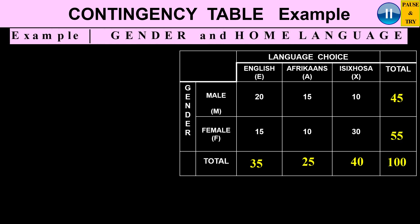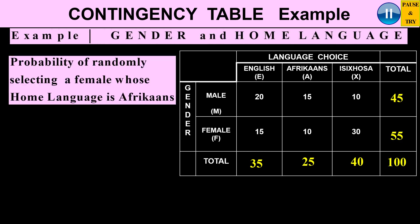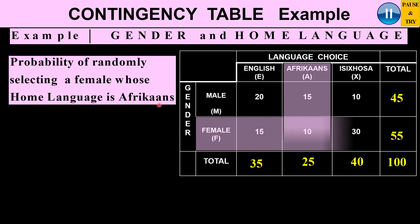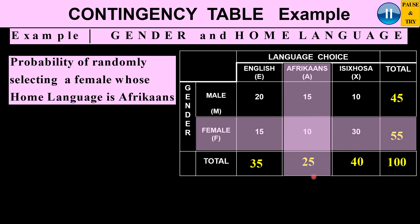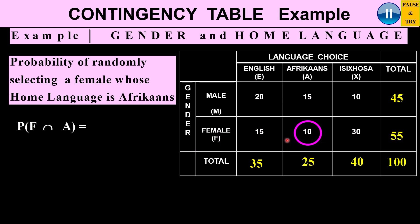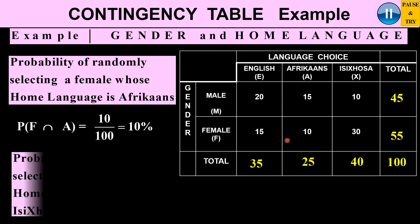Using the same completed contingency table, let's find the probability of randomly selecting a female whose home language is Afrikaans. We look at female and Afrikaans — they overlap — and there are 10 people who are female and whose home language is Afrikaans. So the probability is 10 over 100, which is 10%.